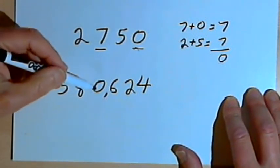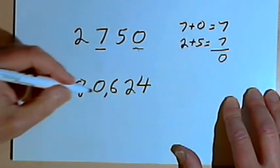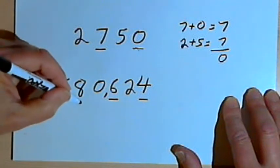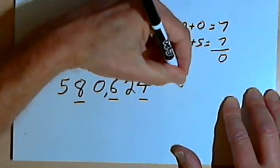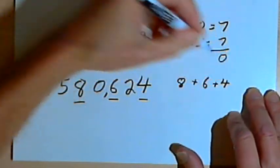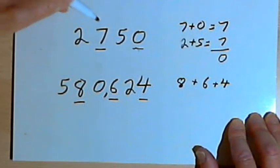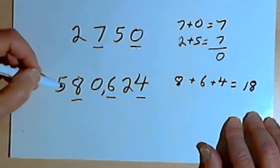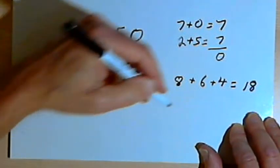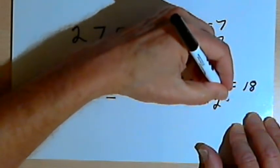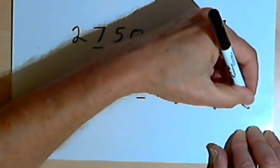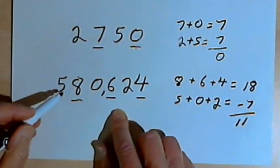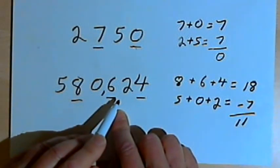And now here's a bigger number, 580,624. So my odd positions are going to be the first position from the right where the 4 is, the third position where the 6 is, and the fifth position where the 8 is. So I'll add together 8 plus 6 plus 4. 6 and 4 is 10, and 8 more is 18. Then I'll add together the even positions — that's the 5, the 0, and the 2. So 5 plus 0 plus 2 equals 7. I'll subtract the smaller number from the bigger number: 18 minus 7 is 11. So this large number, 580,624, is divisible by 11.